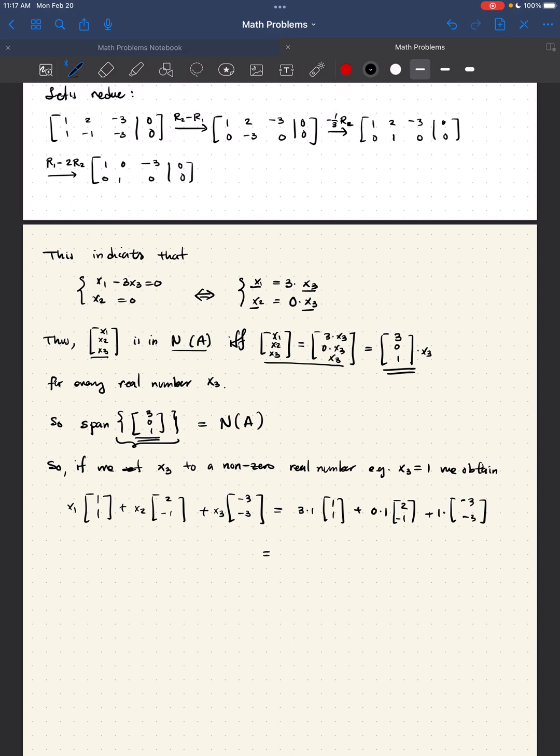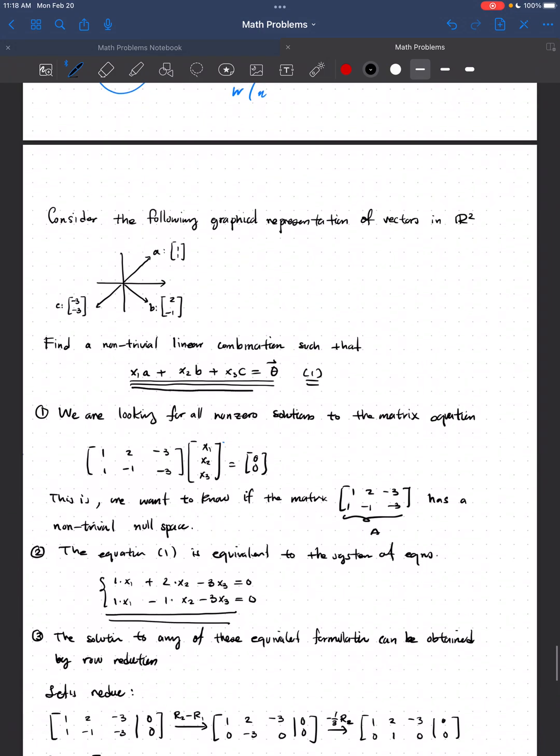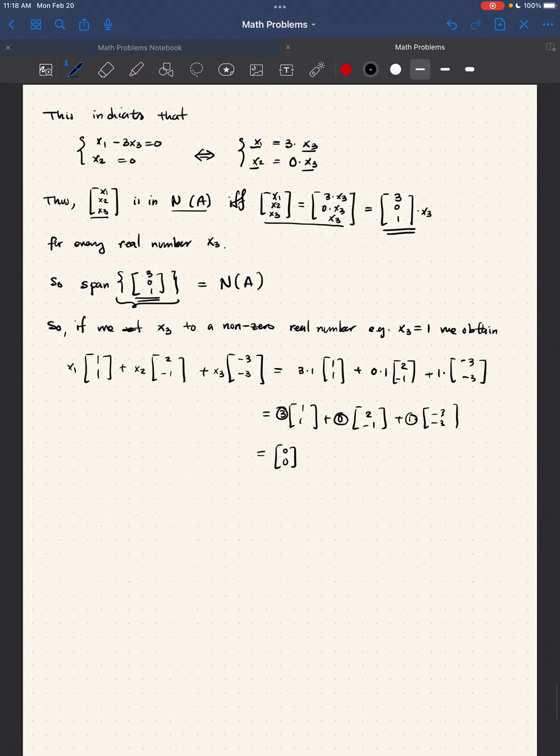Then from here, we'll perform some algebraic reductions. We get 3 times [1, 1], plus 0, times [2, -1], plus 1, times [-3, -3], which, indeed, is equal to 0. So, now, what we have exhibited is a non-trivial solution to the homogeneous equation that we were discussing. So, with this, we finish, and I hope that you like it. Take care.